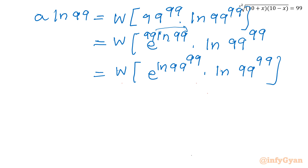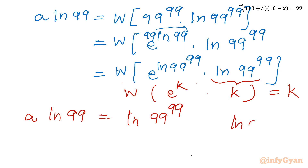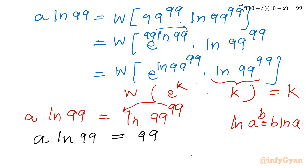Now we use the Lambert W function property: if the argument is k times e raised to the power k, the result is k. So the right hand side becomes ln 99 to the power 99, and the left hand side is a ln 99. Using the logarithmic property, a power b can be written as b ln a, so the right hand side is 99 ln 99. Cancelling ln 99 from both sides, we get a equals 99.